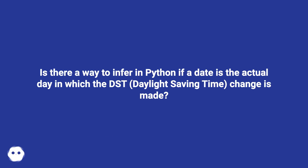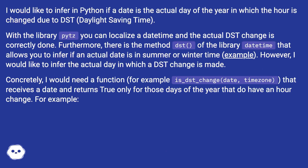Is there a way to infer in Python if a date is the actual day in which the DST daylight saving time change is made? I would like to infer in Python if a date is the actual day of the year in which the hour is changed due to DST daylight saving time.